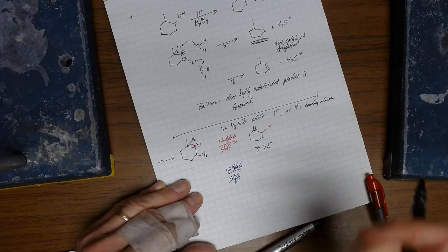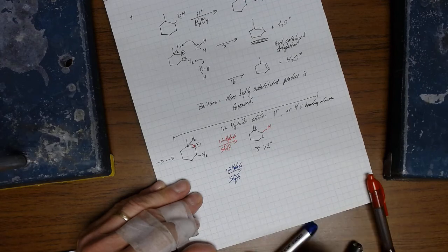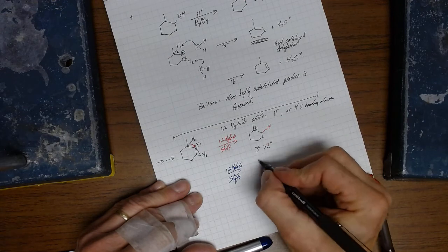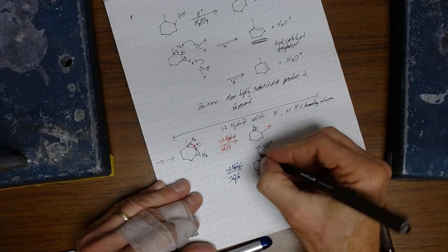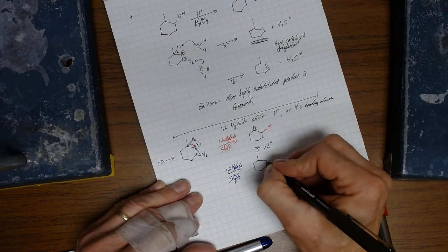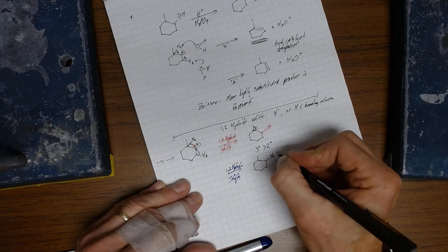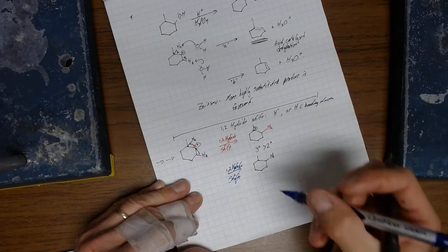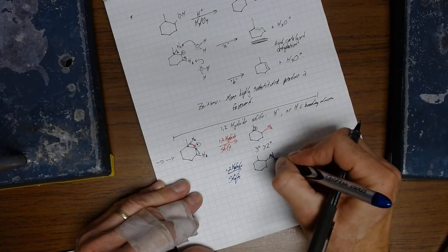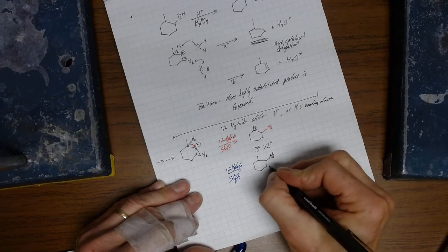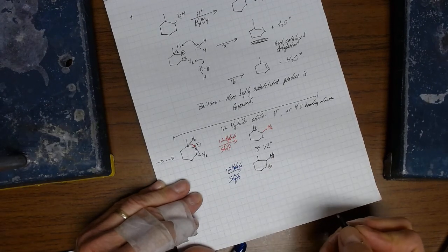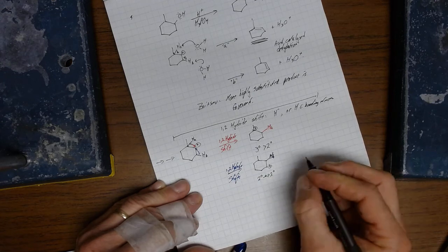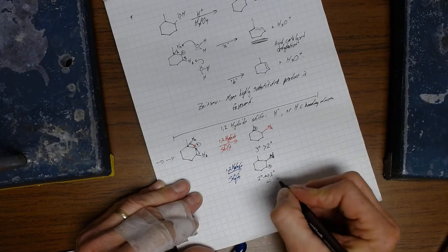And, that would produce this structure. So, this hydride makes its way over here. That produces this. So, we have the new hydrogen, HB is over here. Now, I guess I could have called this HA. And, I'll call this HB, just so we can keep track of all these. And, we end up with a positive here. This is a secondary carbocation shifting to a secondary carbocation. At the very least, it's energetically the same.